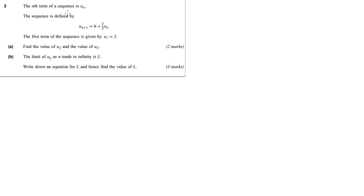So we get this sequence defined here. You'll have seen this before. So the next one in the sequence is 6 plus 2 over 5 of the current one in the sequence. So just the next one and this is the current one here.